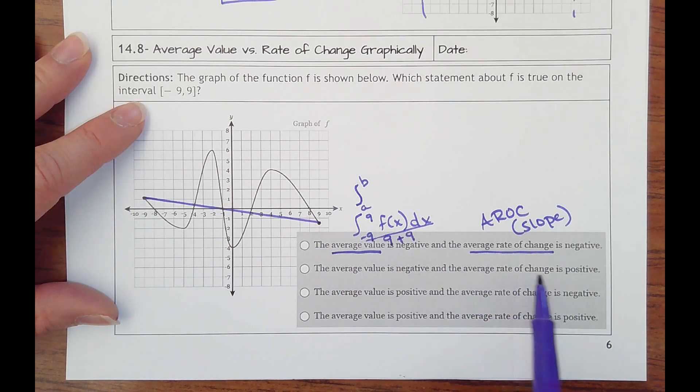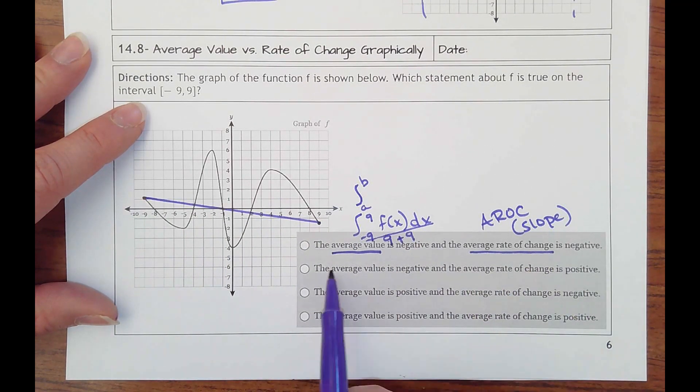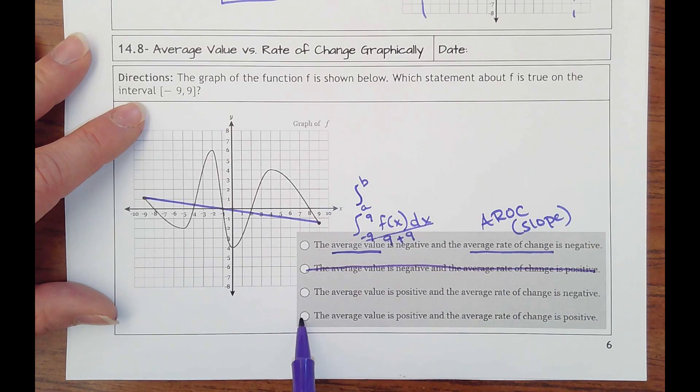So I should have where the average rate of change is negative. So that's not going to be that one and it's not going to be that one.